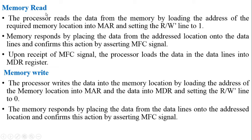A memory read operation means the processor reads data from memory by loading the address of the required memory location into the MAR register and setting the Read/Writē line to 1 (read active). The memory responds by placing the data from that address onto the data lines and confirms this by asserting an MFC signal through the control line.